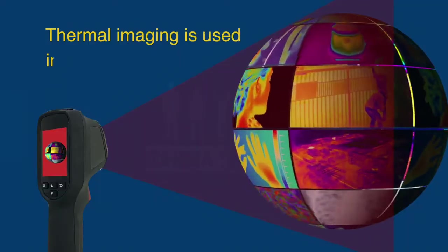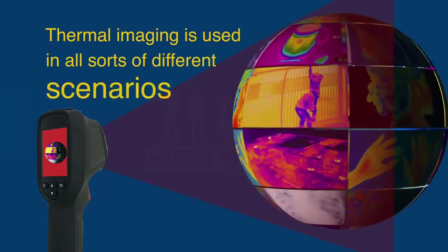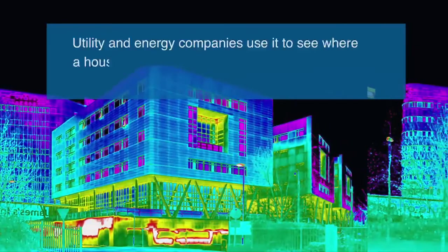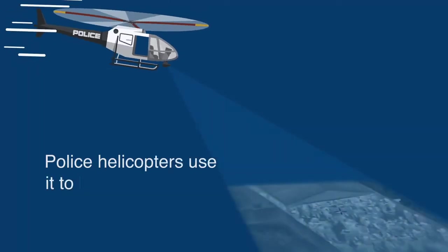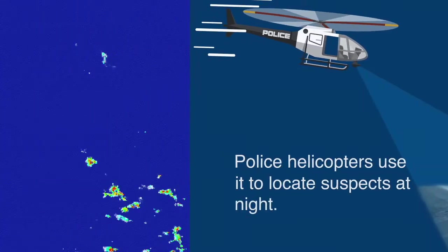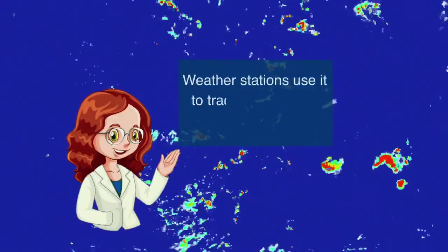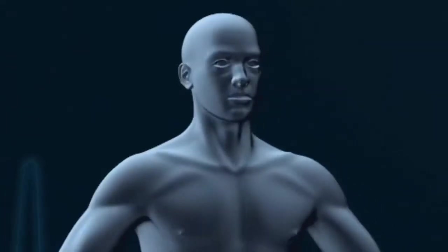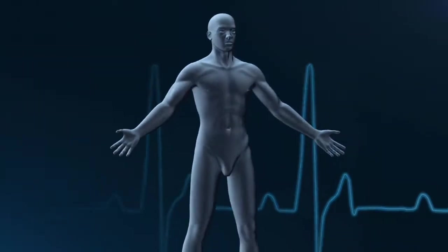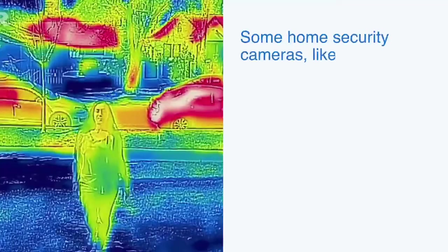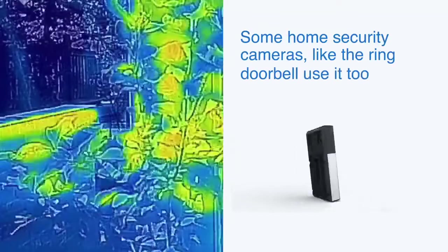Thermal imaging is used in all sorts of different scenarios. Utility and energy companies use it to see where a house might be losing heat through door and window cracks. Police helicopters use it to locate suspects at night. Weather stations use it to track storms and hurricanes. It's used in the medical field to diagnose different disorders and diseases. And some home security cameras, like the Ring doorbell, use it too.